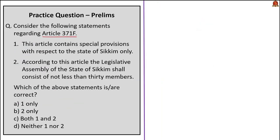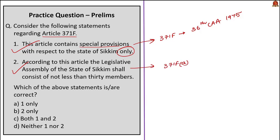The next question is about Article 371F. Statement 1 — this article contains special provisions for the state of Sikkim only, inserted by the 36th Constitutional Amendment Act of 1975 — is correct. Statement 2 — the legislative assembly of Sikkim shall consist of not less than 30 members as per clause (a) of Article 371F — is also correct. Both statements are correct, so the answer is option C: both 1 and 2.